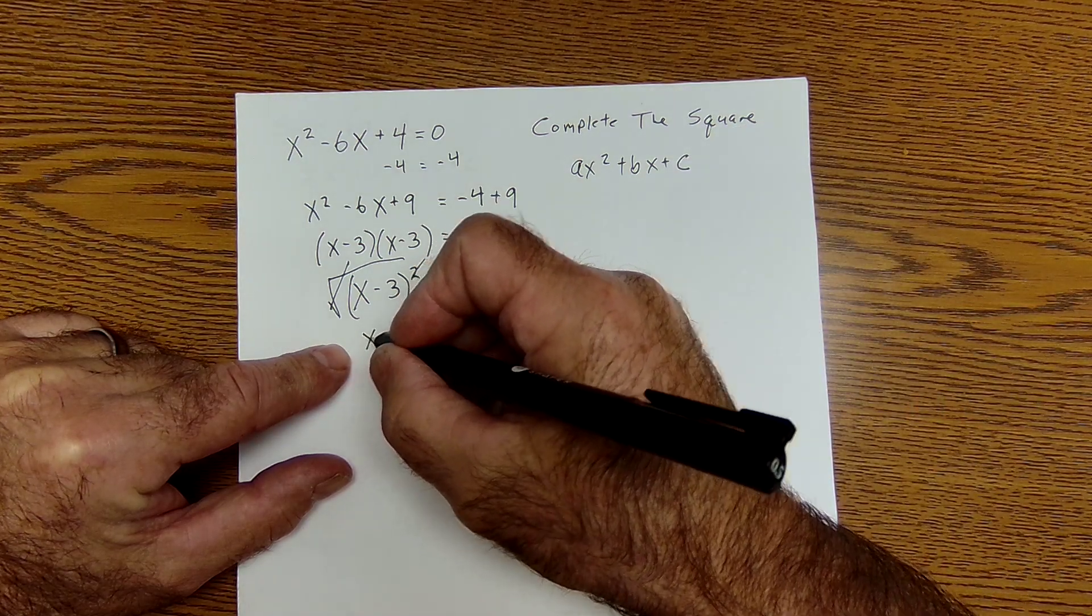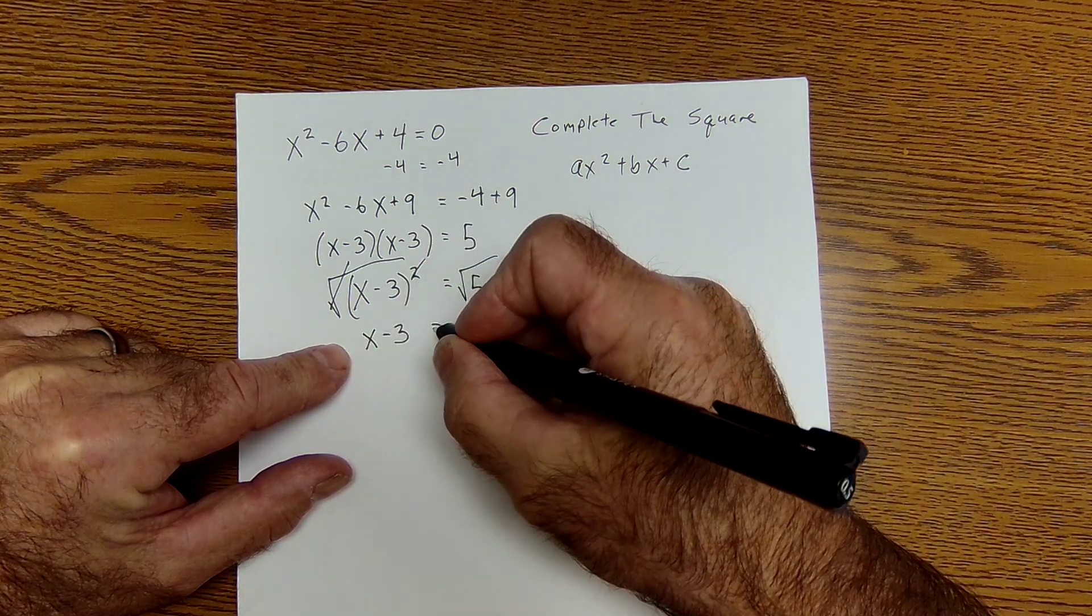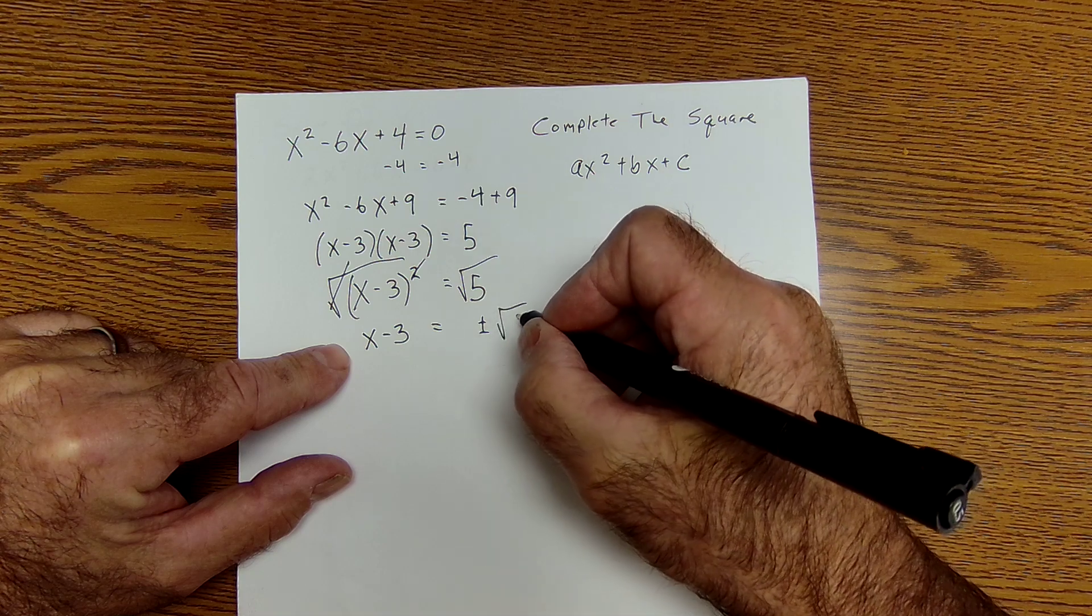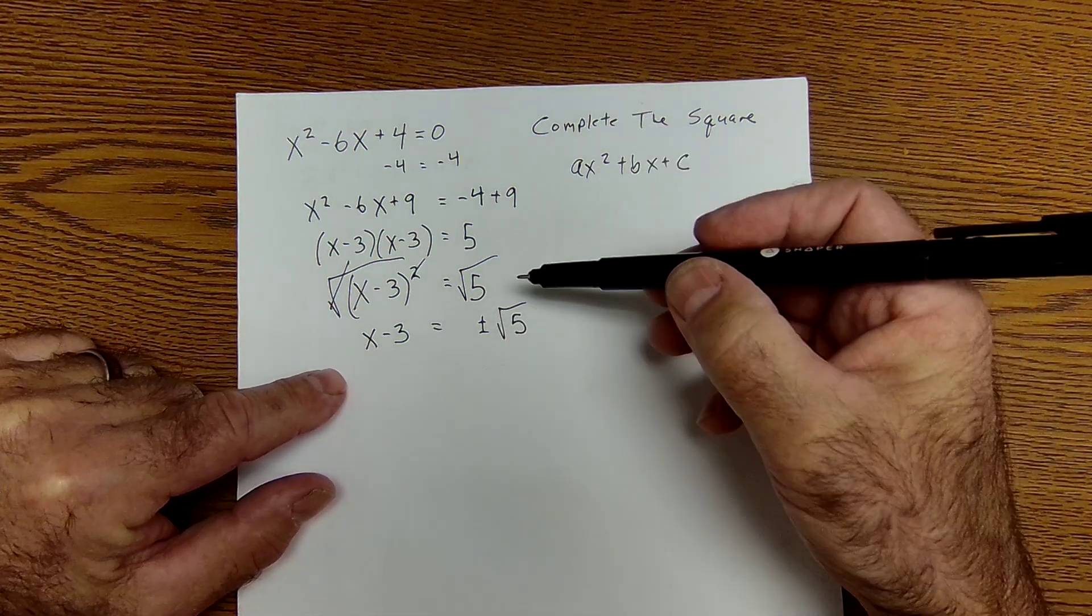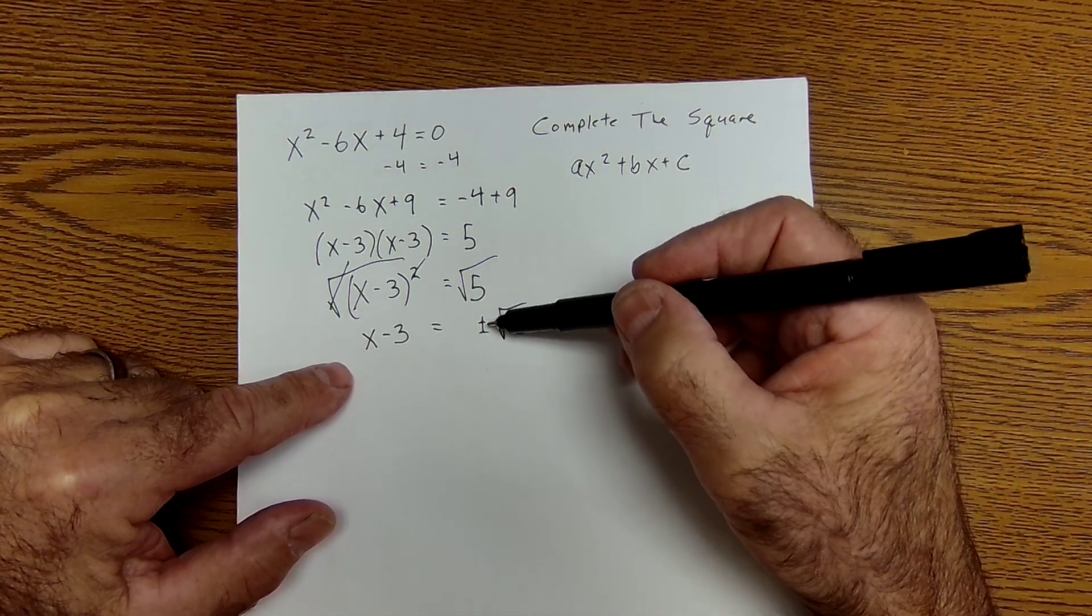I have X minus 3 equals plus or minus the square root of 5. Remember, any time you take the square root, it's going to be positive or negative.